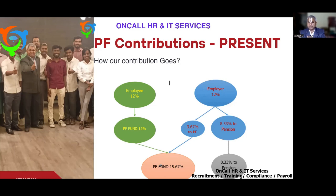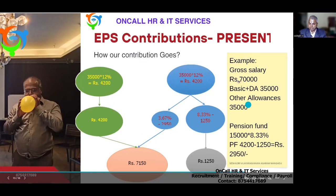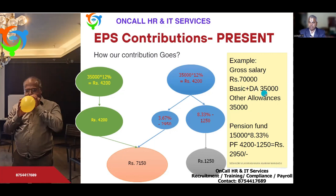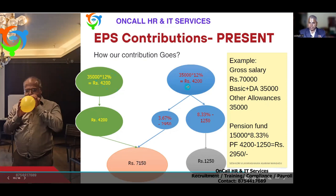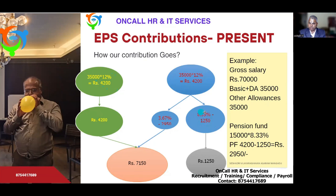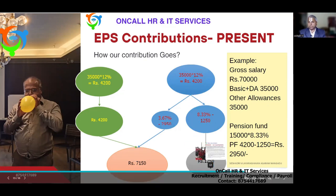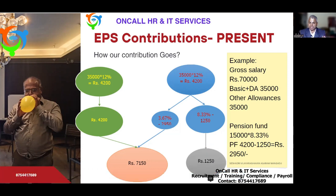Let us take an example. A person's gross salary is ₹70,000 — basic plus DA plus retaining allowance is ₹35,000, other allowances ₹35,000. As of today: employee's 12% = ₹35,000 × 12% = ₹4,200 goes directly to PF. Employer share: subject to the statutory limit, only ₹1,250 can go to pension (₹15,000 × 8.33%). So ₹4,200 minus ₹1,250 = ₹2,950 goes to PF account, and ₹1,250 goes to the pension account.